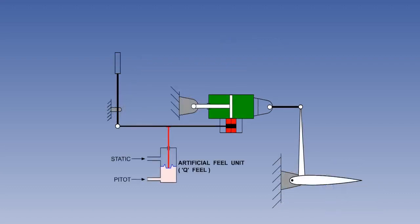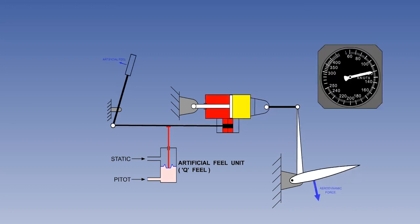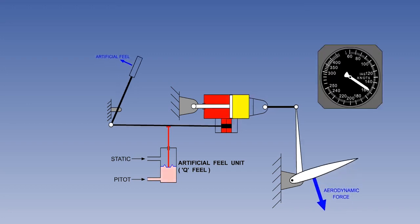A device must be incorporated in a fully powered flying control system to duplicate the required stick force or feel artificially. The artificial feel unit responds to changing dynamic pressure in the same way as an airspeed indicator. And because the symbol for dynamic pressure is Q, the device is also referred to as Q-feel.